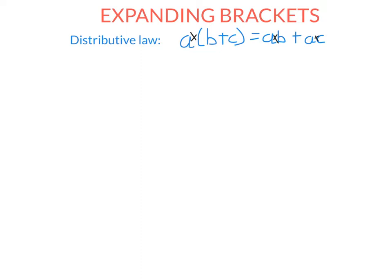Let's look at some examples. If we wanted to expand 2 outside of (x + 4), remember it's 2 times what's in brackets. We distribute the 2 to the x — 2 times x — then distribute the 2 to the positive 4. So 2 times positive 4 gives you positive 8, and we're done.